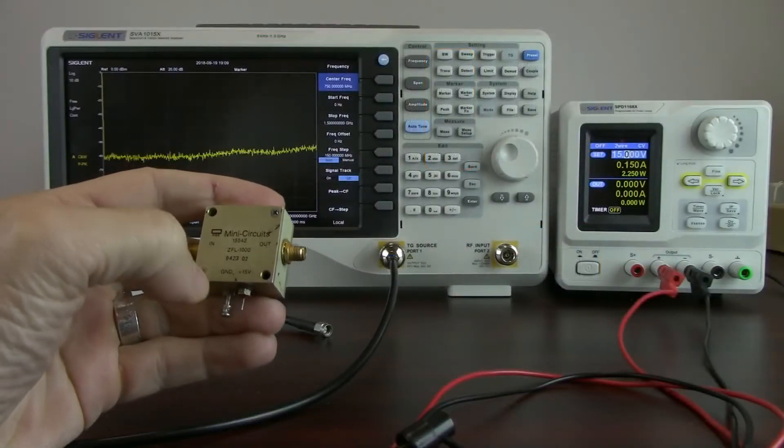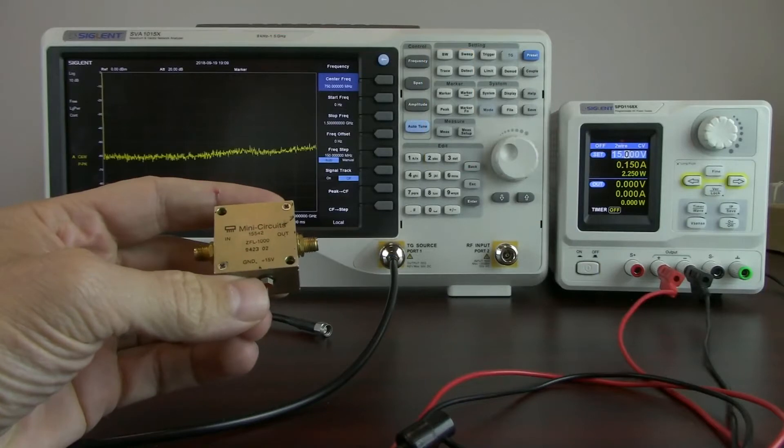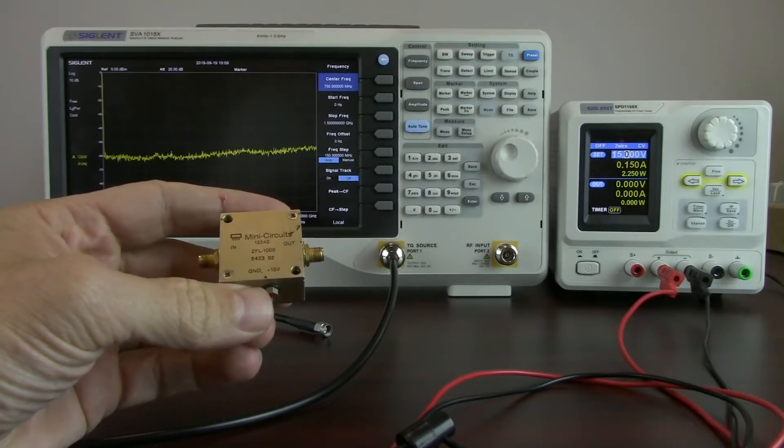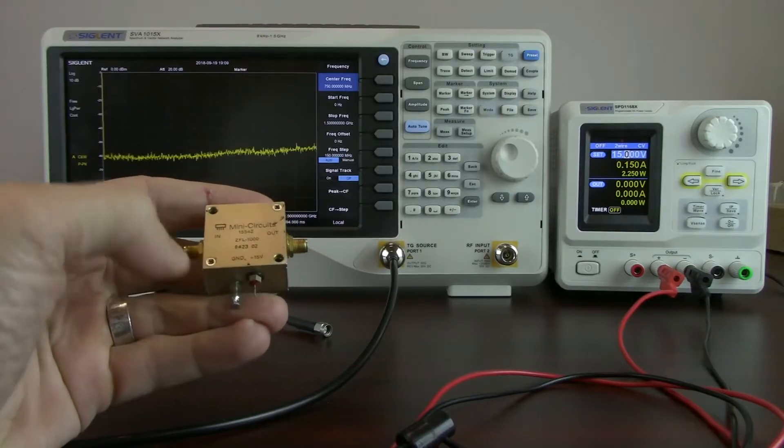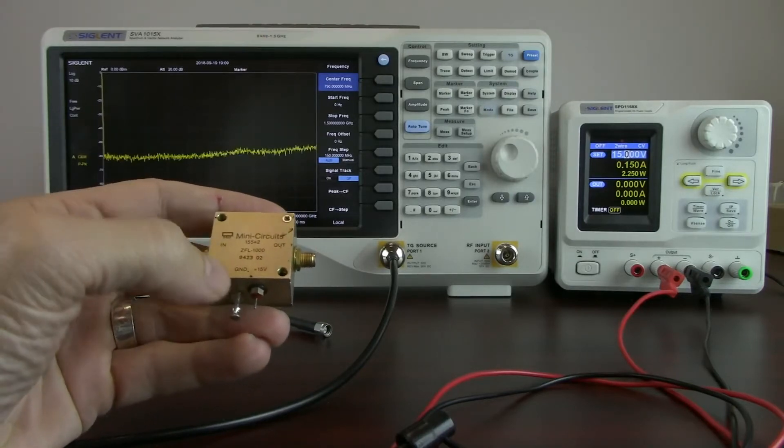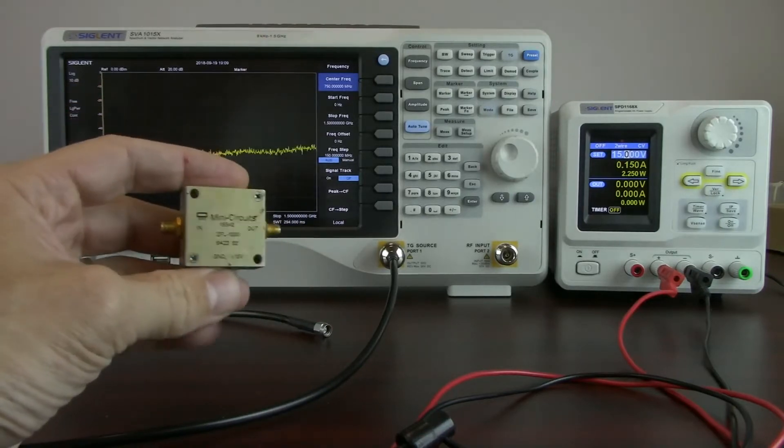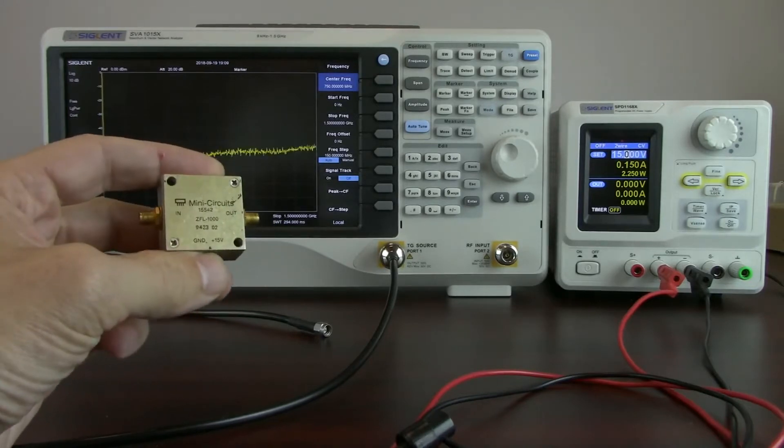VSWR is a way to calculate or to describe the impedance match between a particular circuit element and the circuit of interest. Most of the time this is going to be 50 ohms or very near 50 ohms.